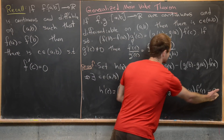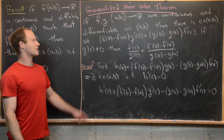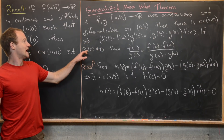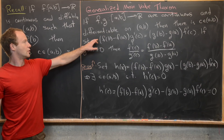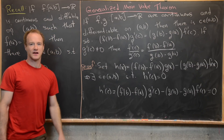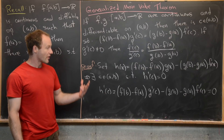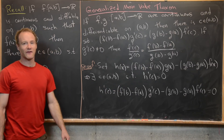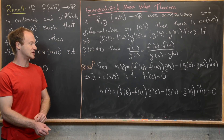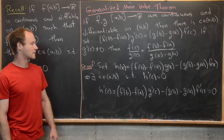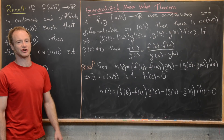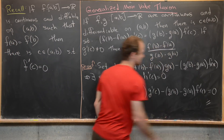We have this big term minus this big term equals zero, which we can rearrange into the equation f(b) − f(a) times g'(c) = g(b) − g(a) times f'(c). If g'(c) ≠ 0 we can further rearrange this into f'(c)/g'(c) = [f(b) − f(a)] / [g(b) − g(a)], which is exactly the conclusion of the generalized mean value theorem. That finishes the proof.